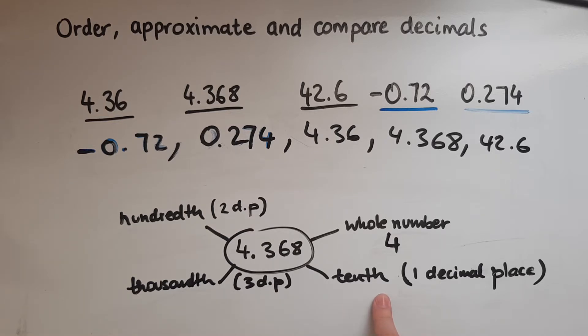Now looking at rounding to the nearest tenth or one decimal place, because it means the same thing. So that's the tenth because we need ten of them to make a whole, and it's one decimal place because it's one digit after the decimal point.